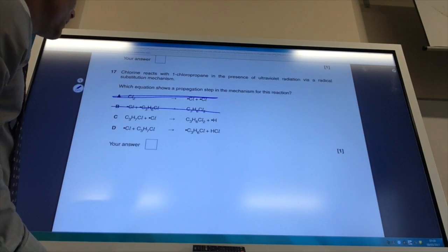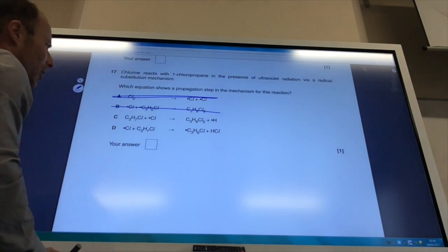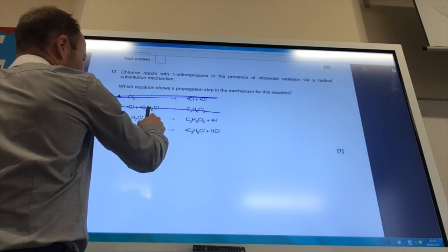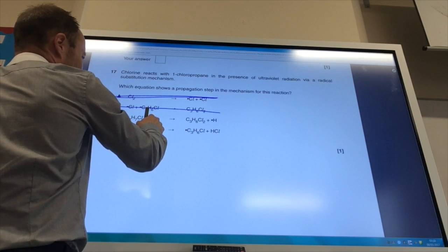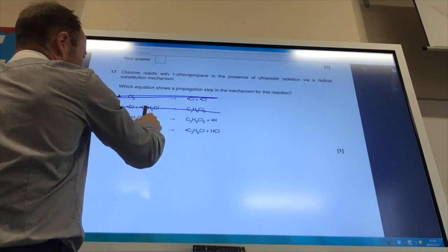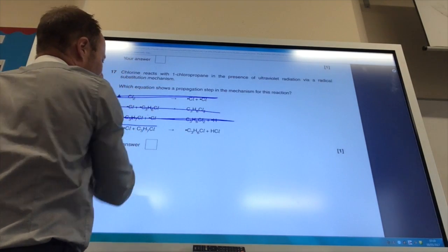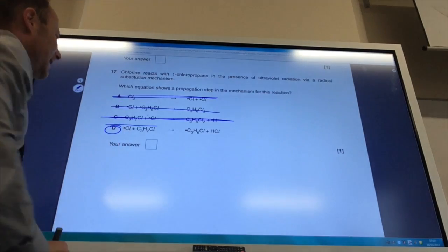It's chlorine reacting with 1-chloropropane. If this radical comes in, it's either going to find a chlorine to form Cl2 or it's going to find a hydrogen to form HCl. It's not going to form an H radical. So the answer is D.